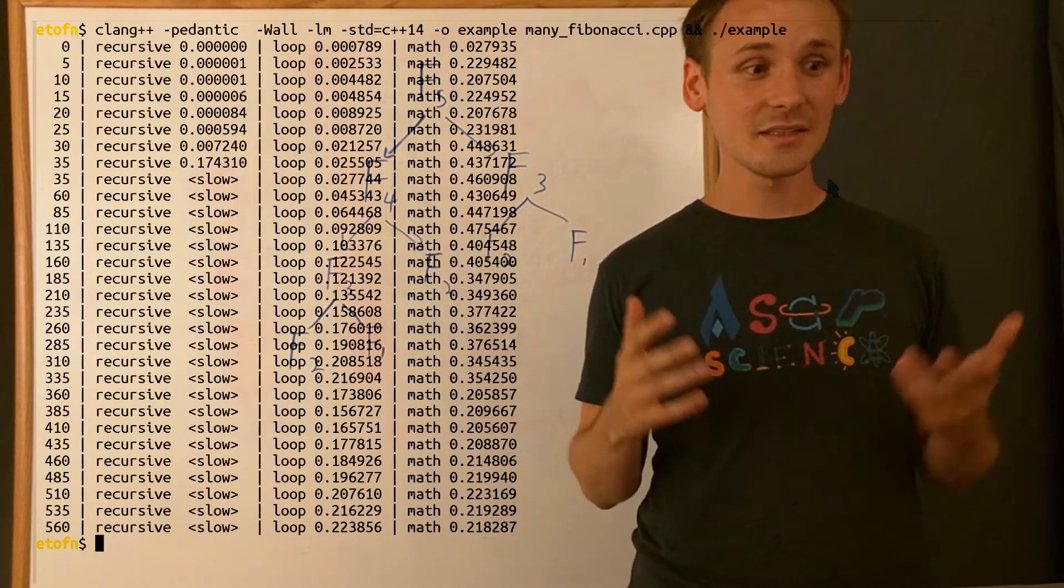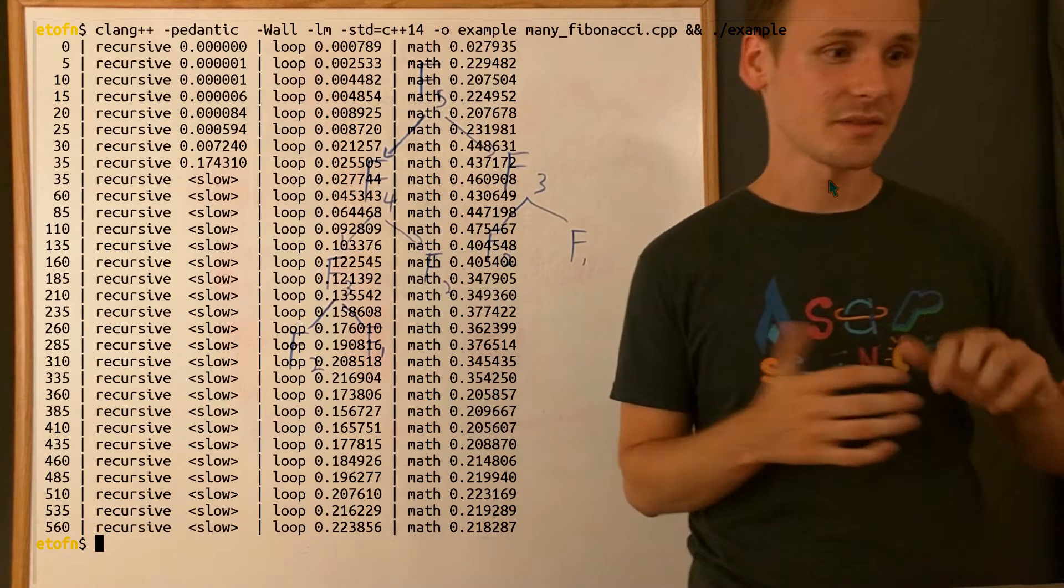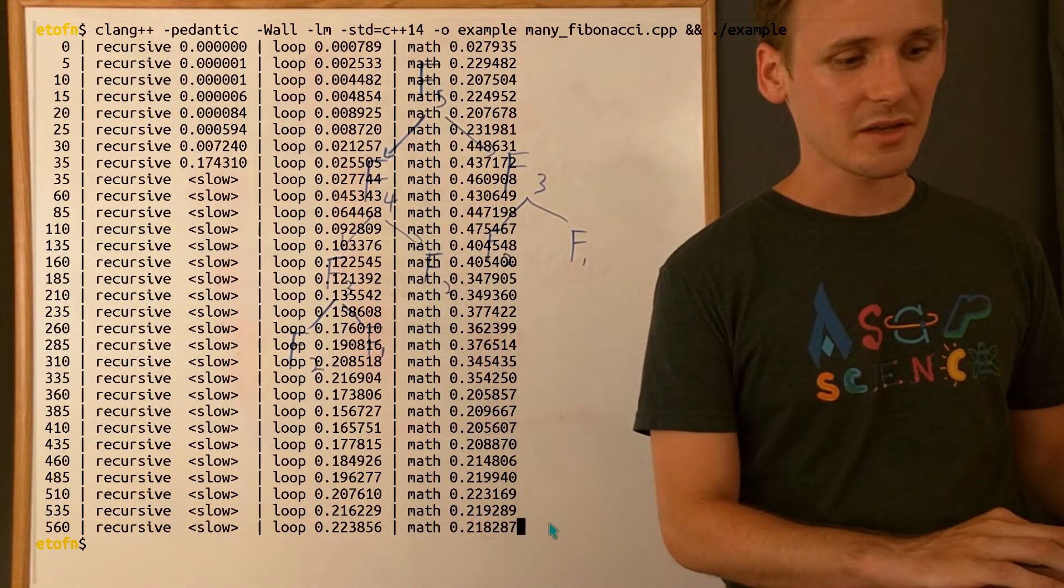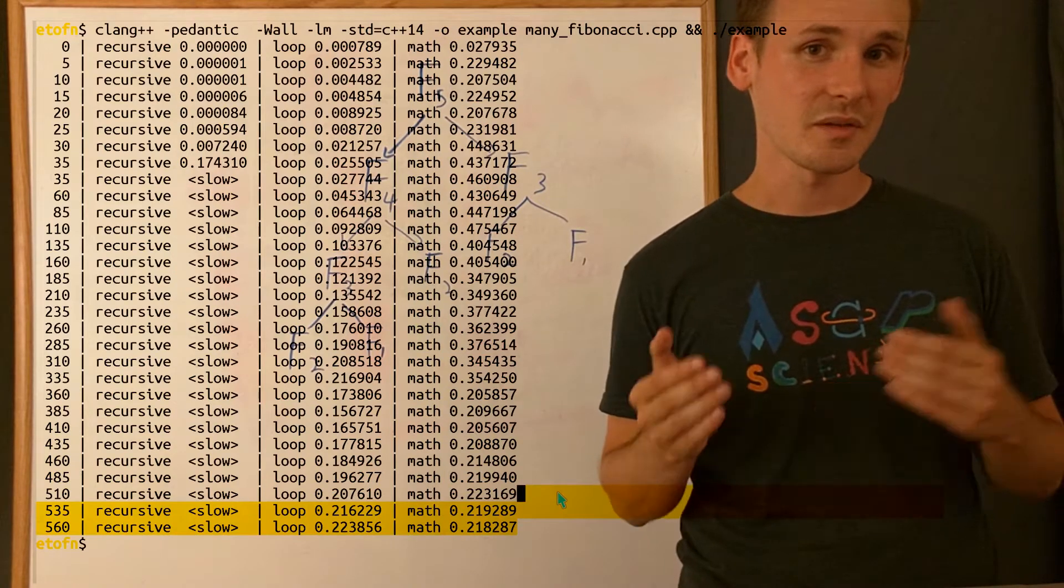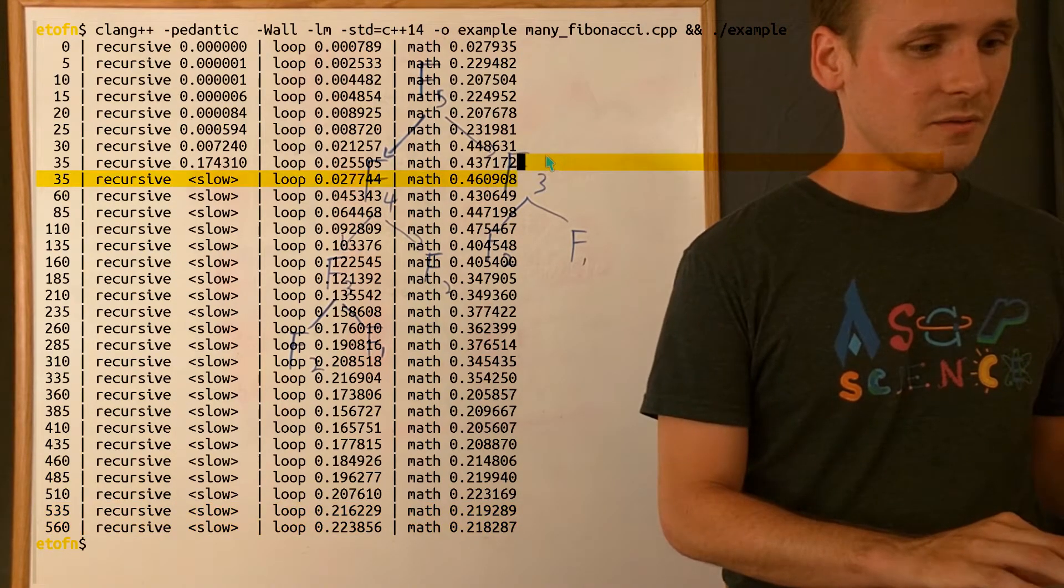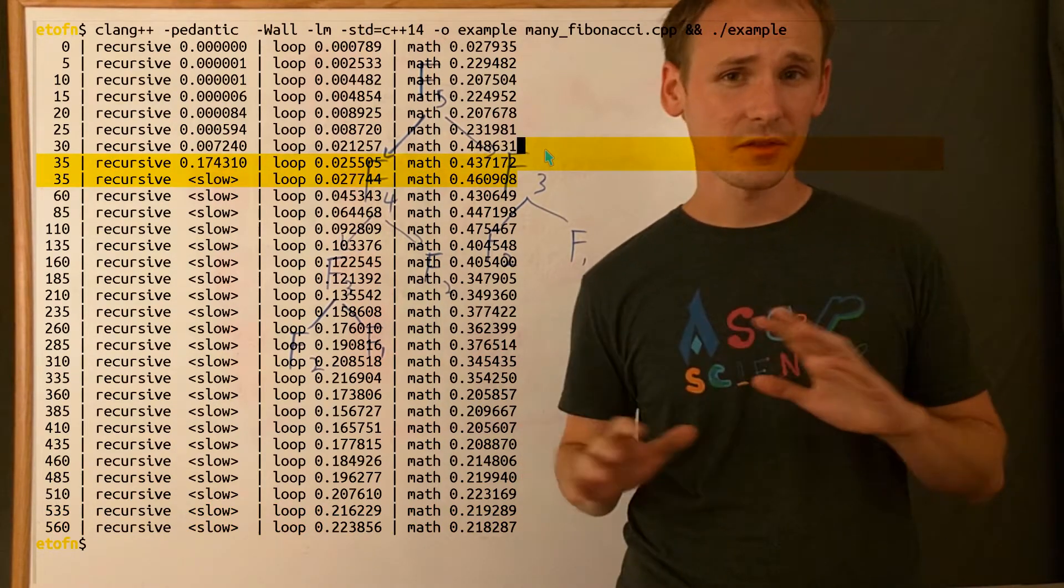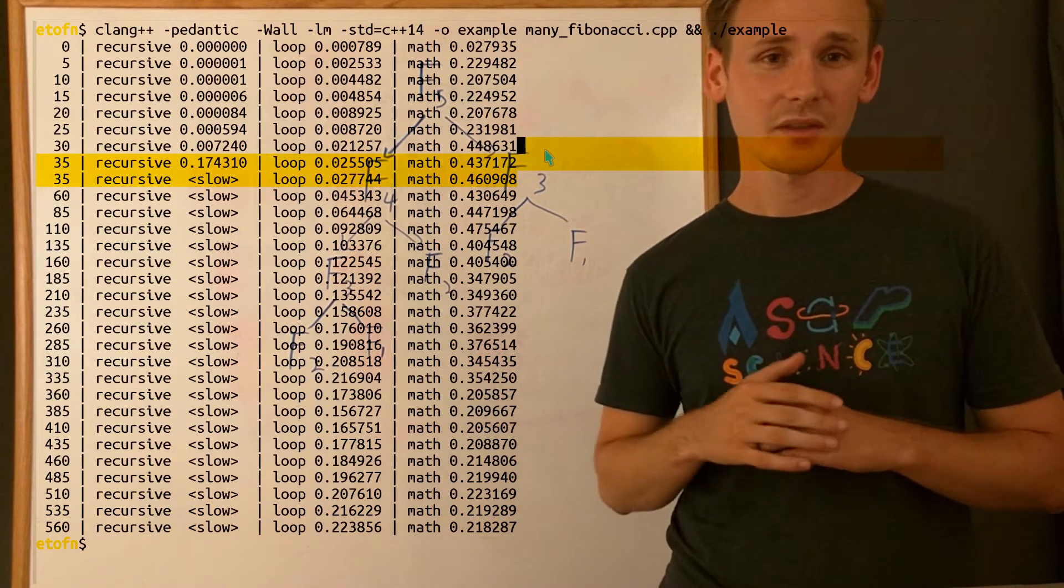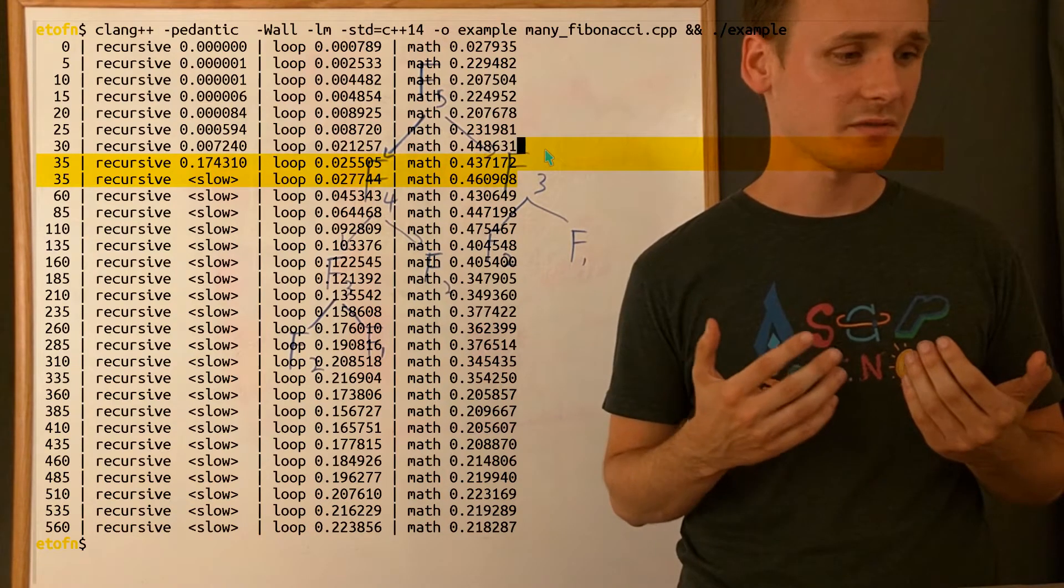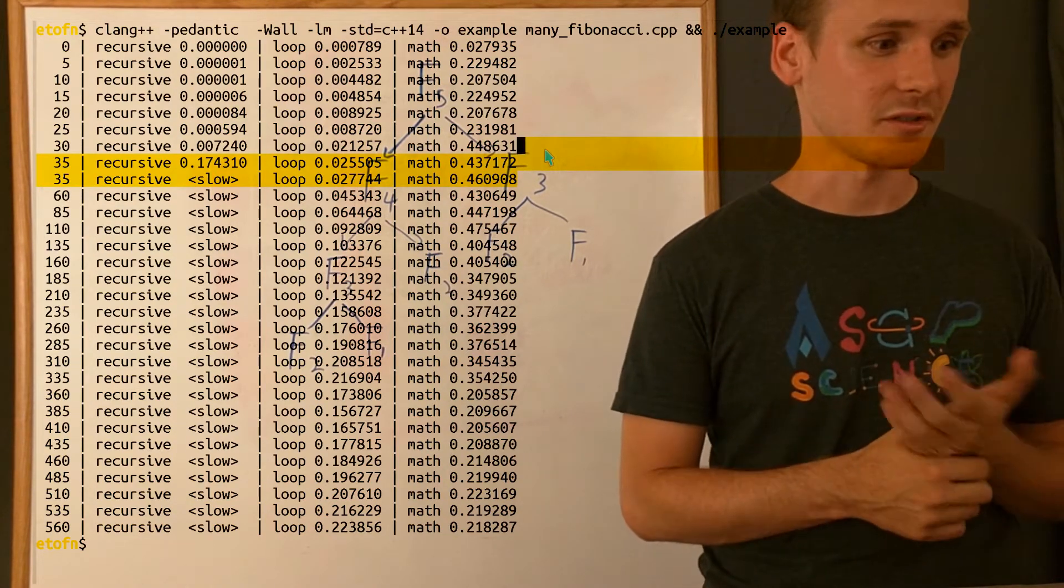If we actually look at the numbers, that is, in fact, exactly what happens. Initially, the math one is the slowest, but eventually, right towards the end, it eventually becomes the fastest of them all. Similarly, once we start calculating around the 35th Fibonacci number, the loop version is still relatively fast compared to the recursive version.